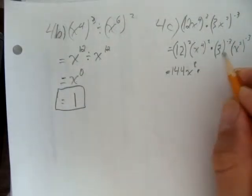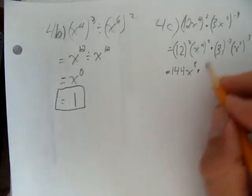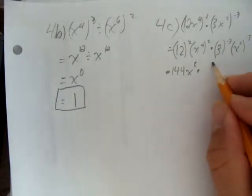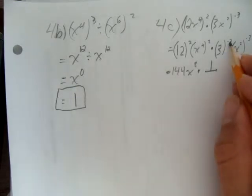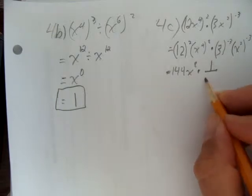Times, okay, what do we do here? 3 to the power of negative 3, whenever you see a negative exponent the first thing you should do is put it under the line. A negative exponent is the same as 1 over